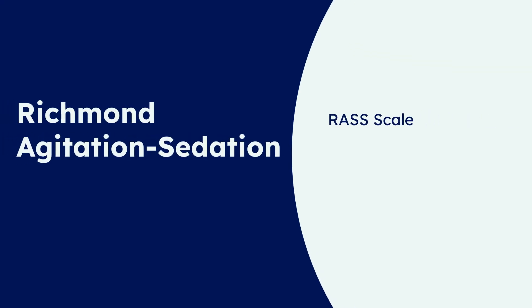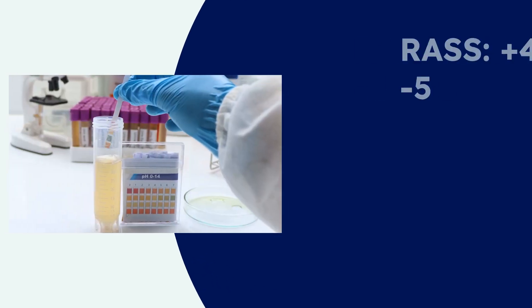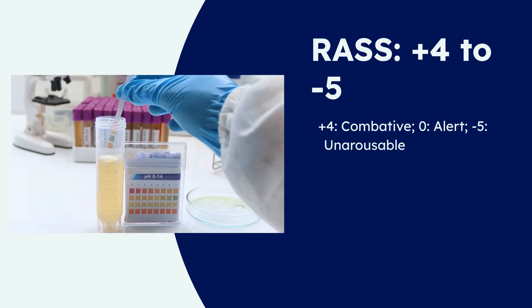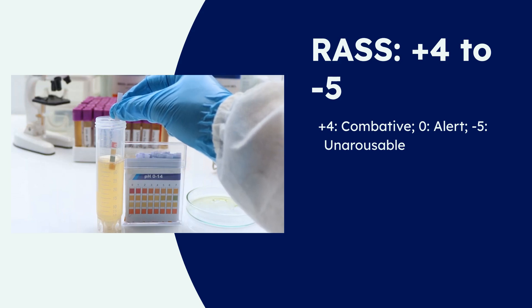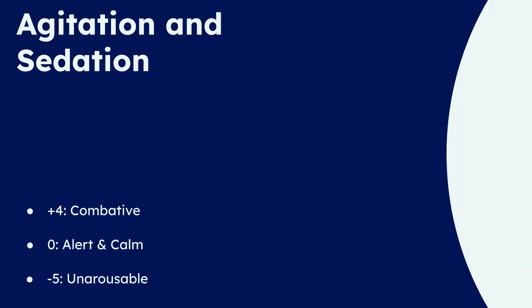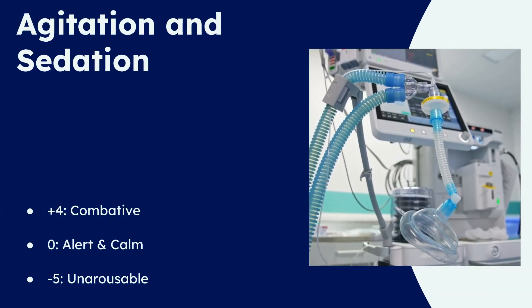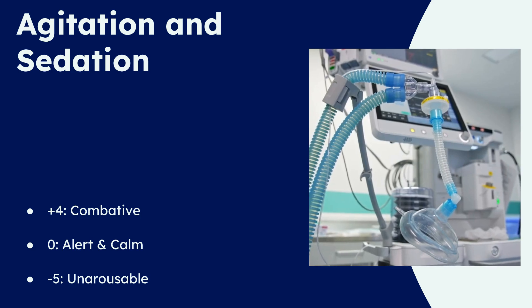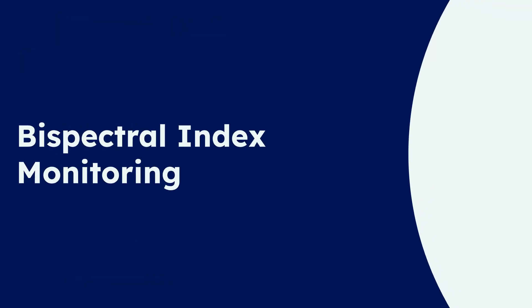Next we have the Richmond Agitation Sedation Scale, or RASS. This scale is a 10-point system ranging from plus 4 to minus 5, allowing clinicians to assess both agitation and sedation. A plus 4 indicates a combative patient, 0 means alert and calm, and minus 5 signifies an unarousable or deeply sedated patient. A score of minus 5 means the patient shows no response to voice or physical stimulation, a level often used in mechanically ventilated patients.